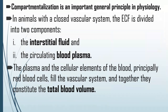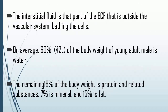Compartmentalization is an important general principle in physiology. Everyone needs to understand the amounts and percentages of fluid in each compartment. ECF is divided into interstitial fluid and circulating blood plasma. Interstitial fluid is the part of the ECF outside the vascular system that bathes the cells. On average, 60% of a young adult's body weight is water; the remaining 18% is protein and related substances, 7% are minerals, and 15% is fat.